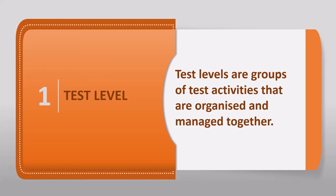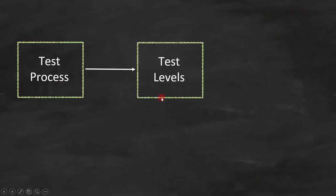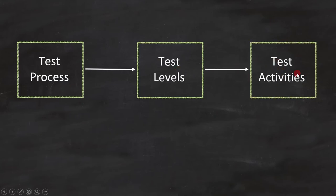Let's try to figure out where test levels come in the larger picture. Firstly, the test process is defined. This test process will have different test levels, and the test levels will have different test activities inside them, which are organized and managed together in order to achieve the objective of testing.